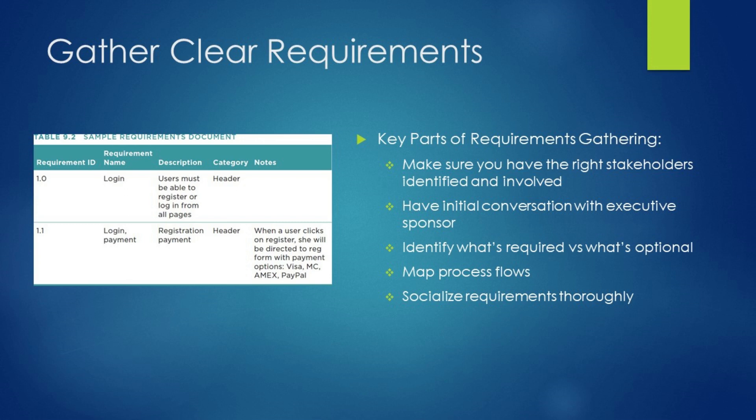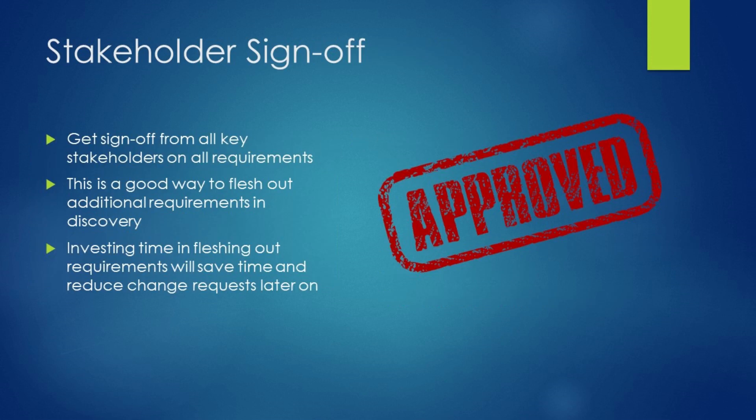Continue socializing the requirements until you're confident they have been fleshed out fully, giving the scope of your project a solid foundation. Number 2: Stakeholder sign-off. After you've fully fleshed out a project's requirements, another good way to prevent scope creep is to have all of the project stakeholders sign off on those requirements.